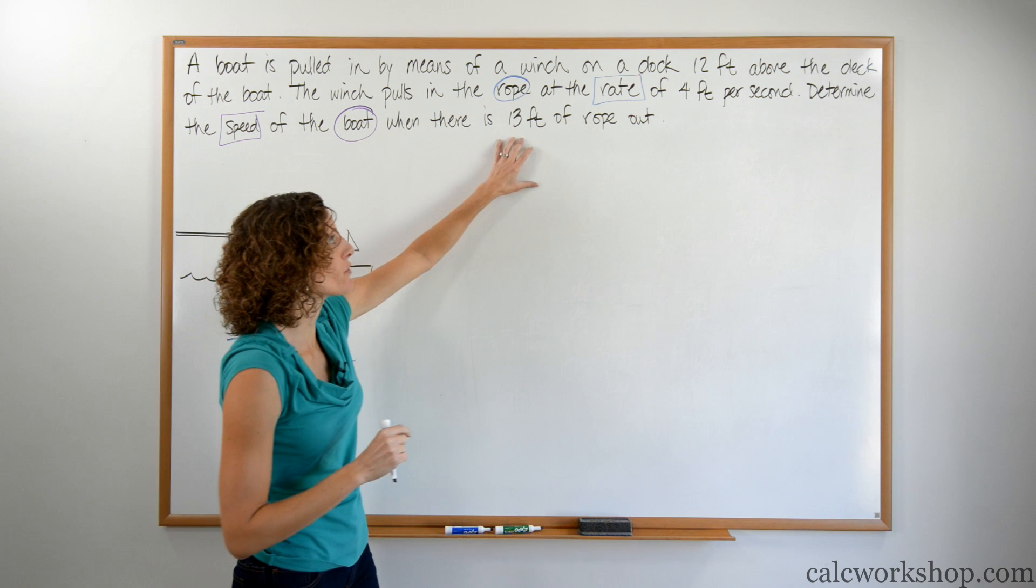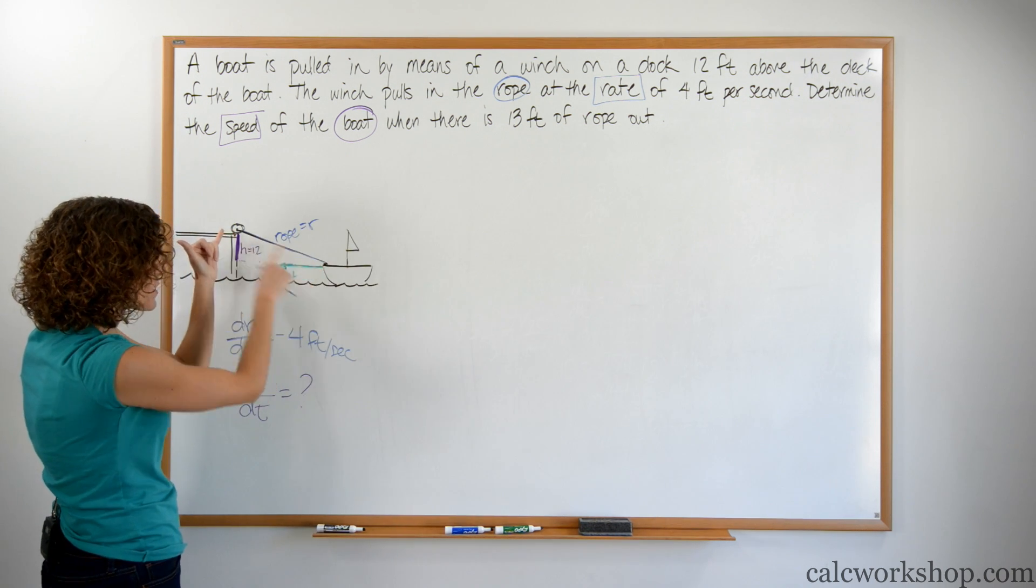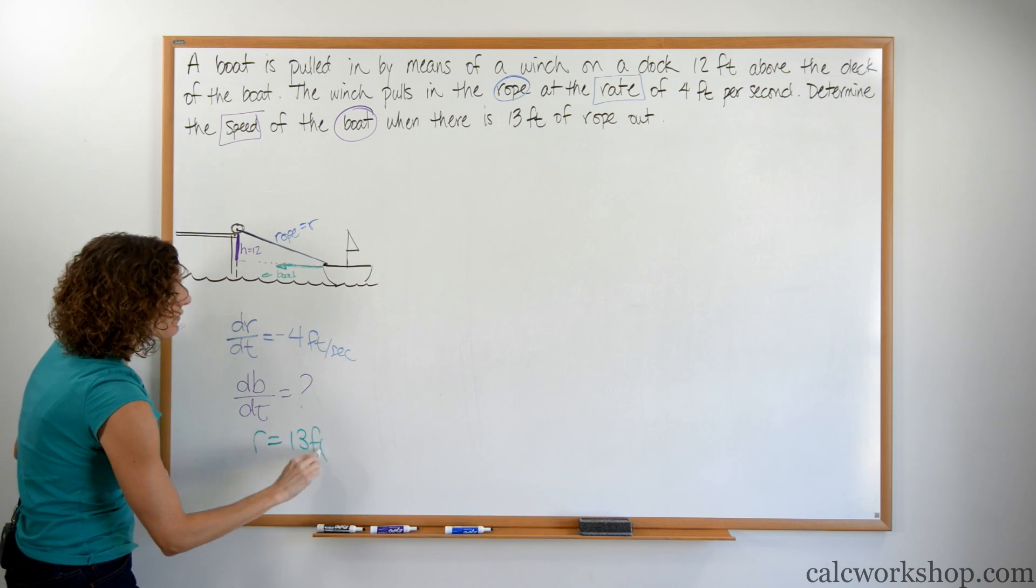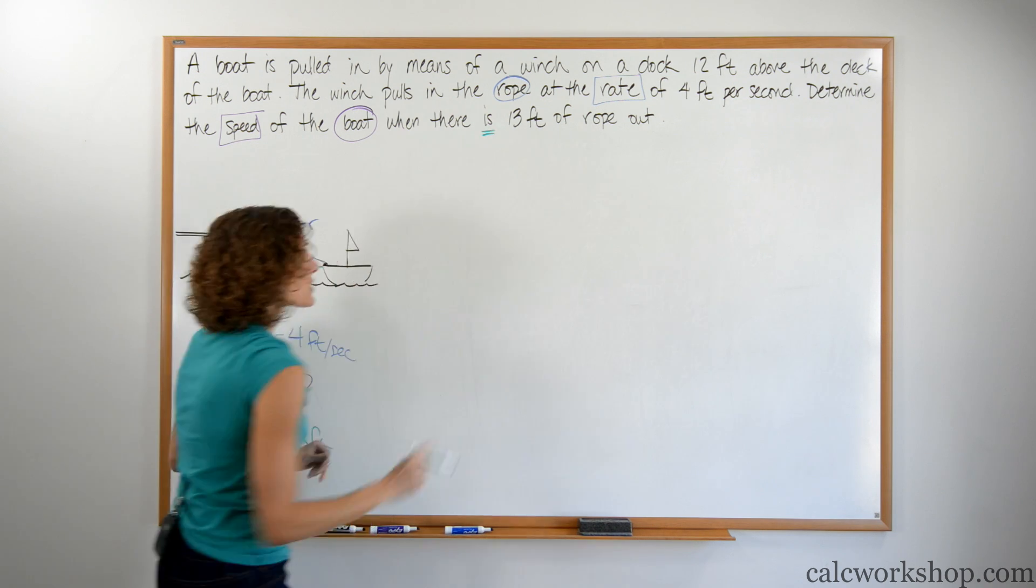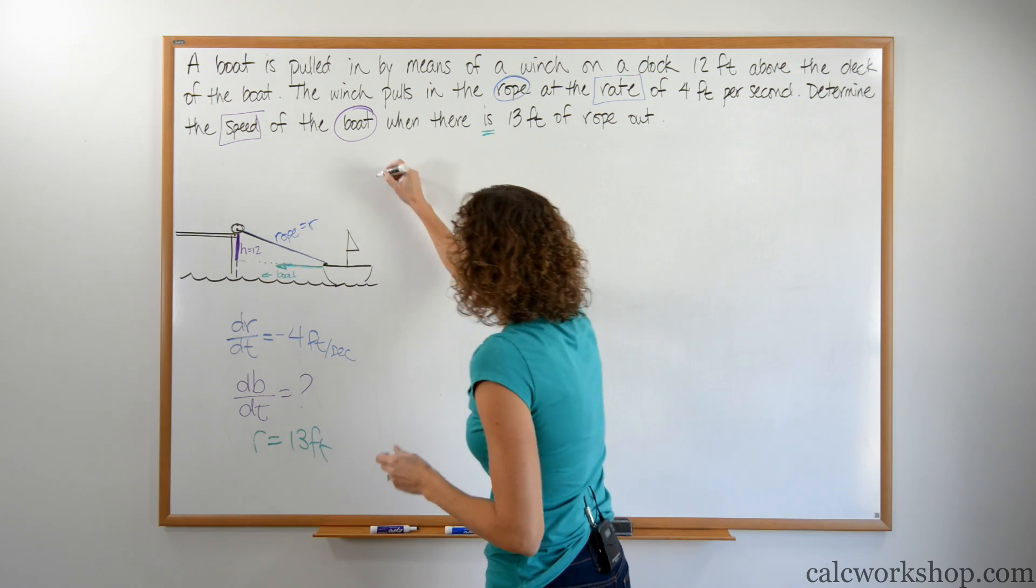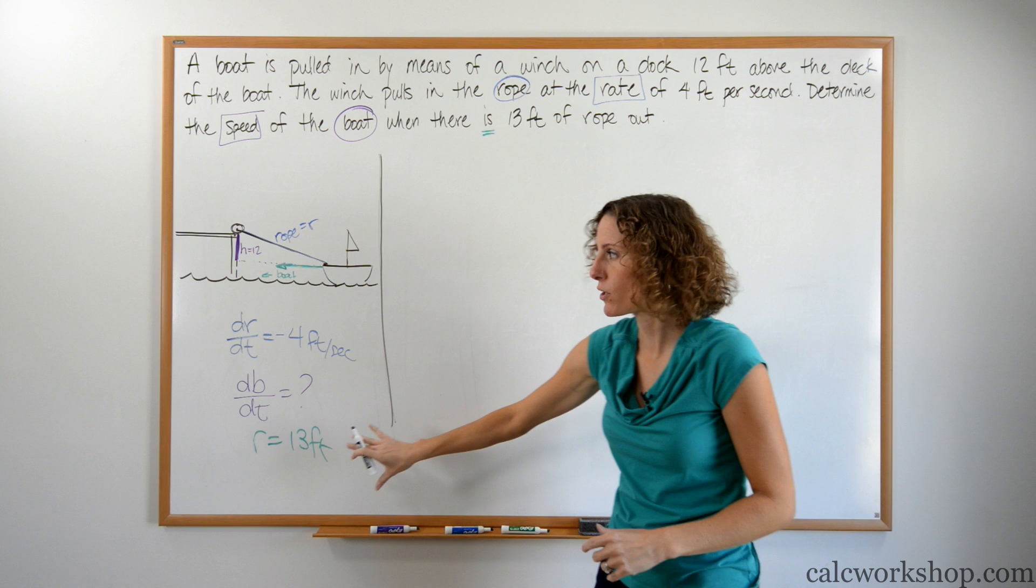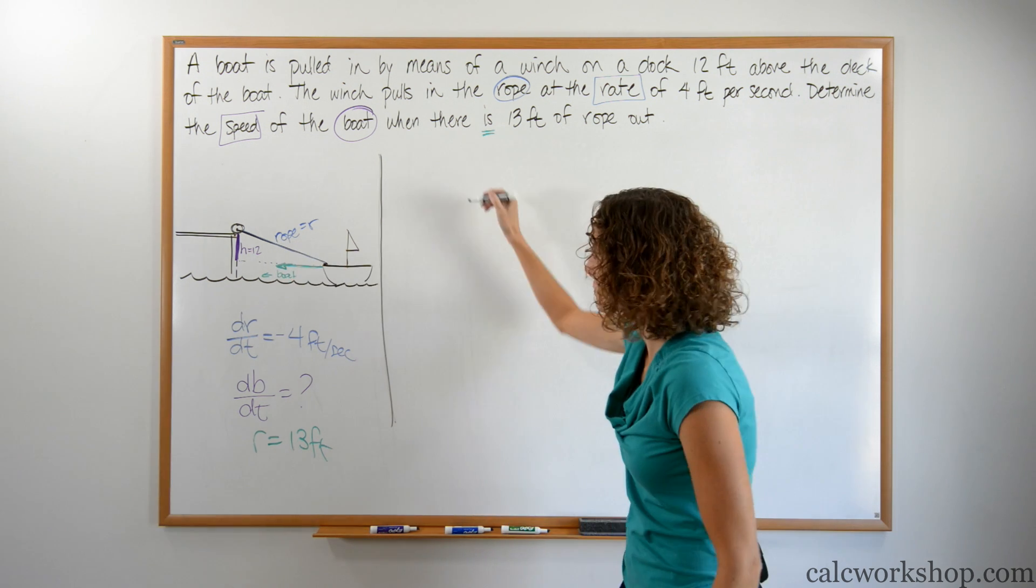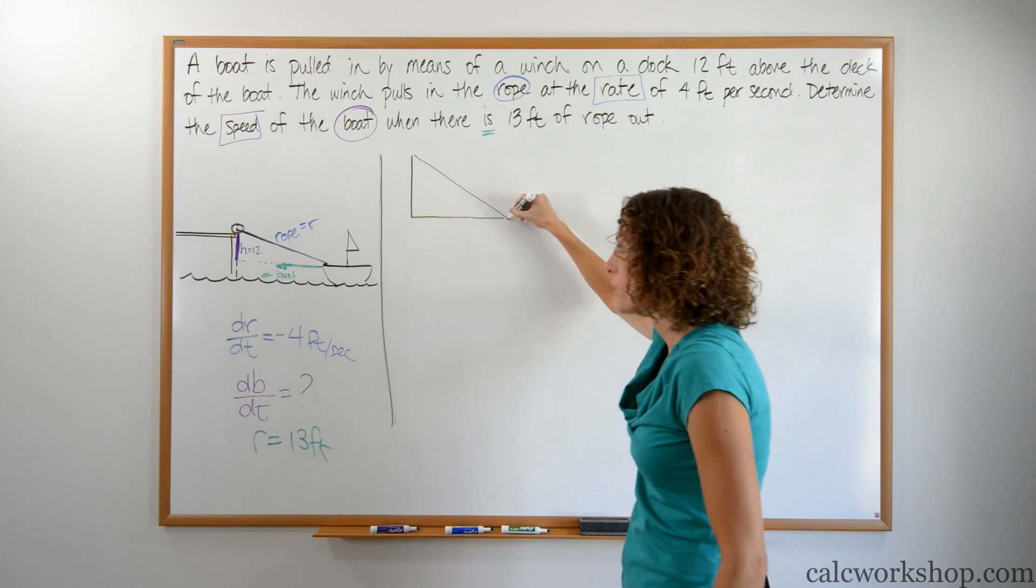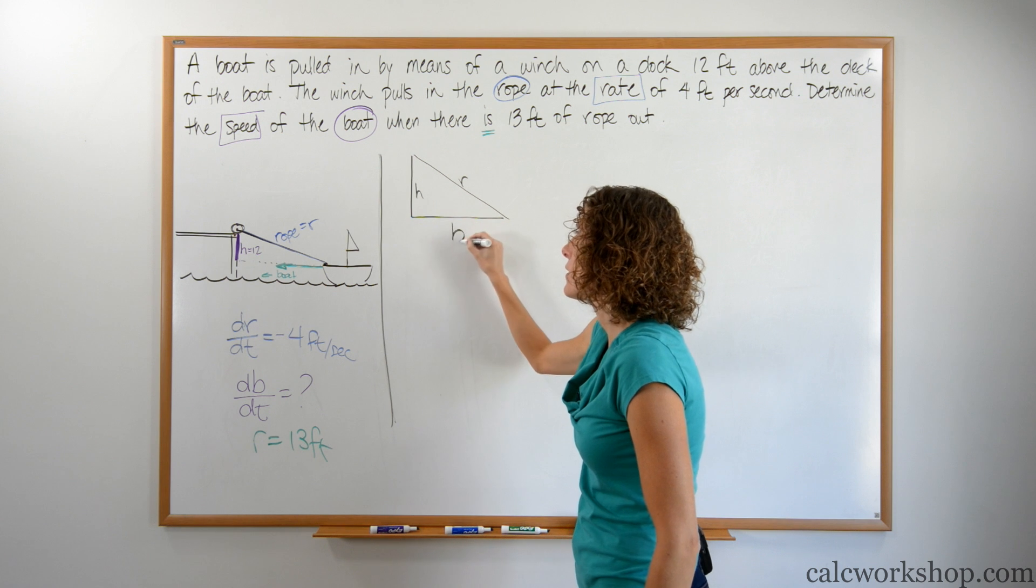When there is 13 feet of rope. Where's the rope? The rope is attached to the winch and the boat, which means we're talking about when R is 13 feet. So we have our picture, we have our sidebar. The question is, how are we going to relate all of these things into one equation? I hope we recognize that we have a triangle. We have this triangle with a height, a hypotenuse R, and a base B.